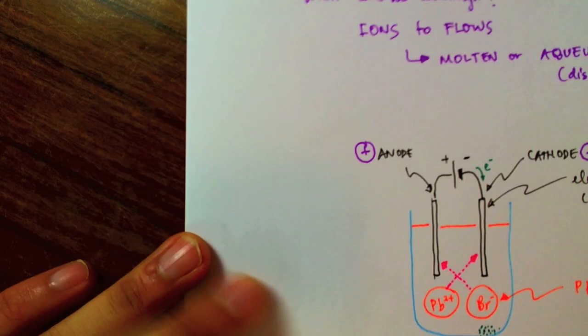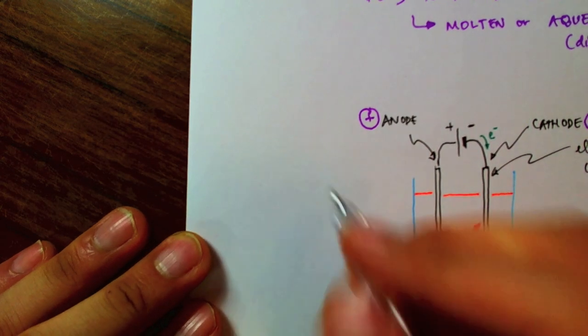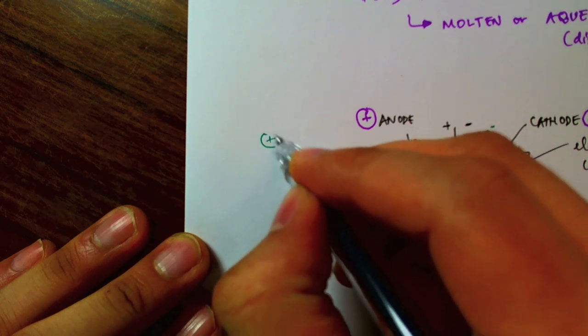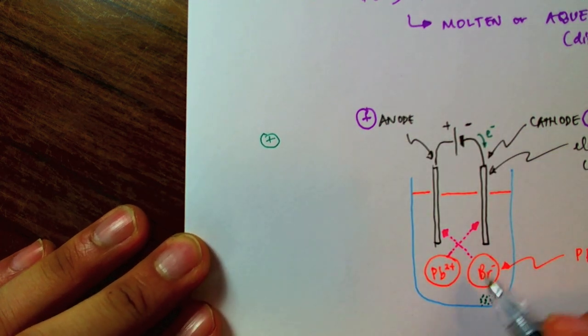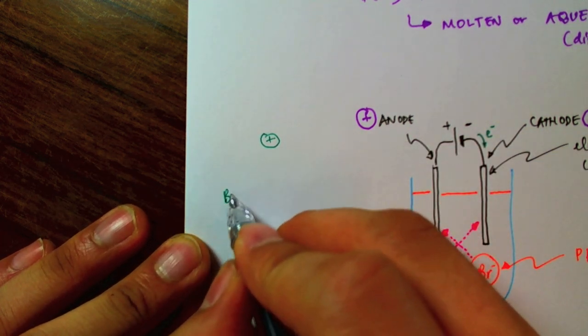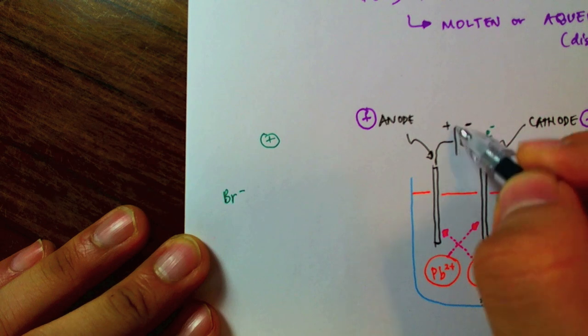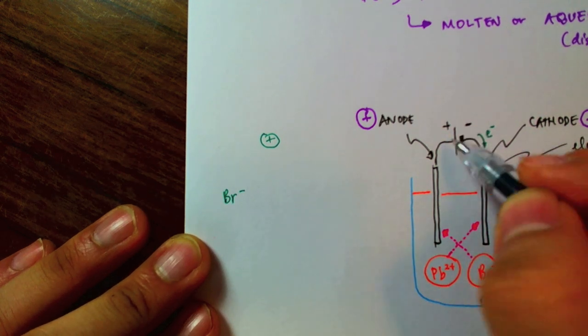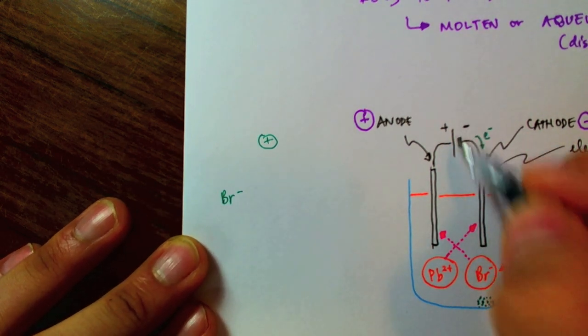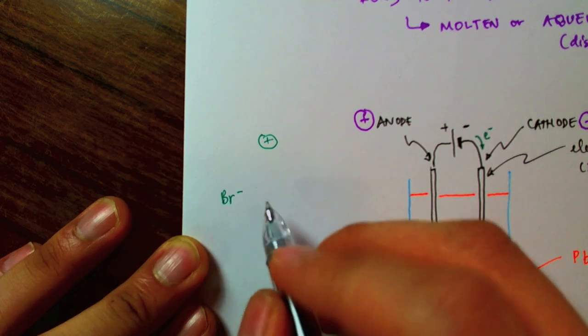And at the anode, what we'll have is that the bromine ions will be discharged. Because the positive terminal of the battery here, you can think of the positive terminal of the battery as attracting the electrons from the bromine.